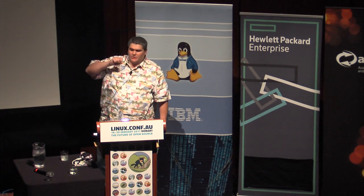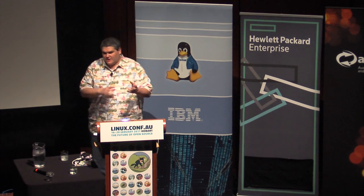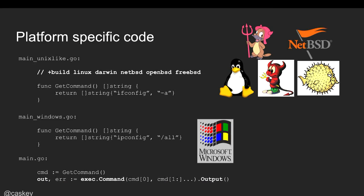From a software engineering perspective, having separate files per platform is not ideal — it violates the Don't Repeat Yourself principle if ifconfig -a appears in multiple files. Instead, you create 'main_unix-like.go' and add a magic comment at the top: '// +build linux darwin netbsd openbsd freebsd'. That means if compiling for any of those targets, use this file; for Windows, use the other. Simply by eliminating duplicate files, you're now targeting six platforms with the exact same tool.